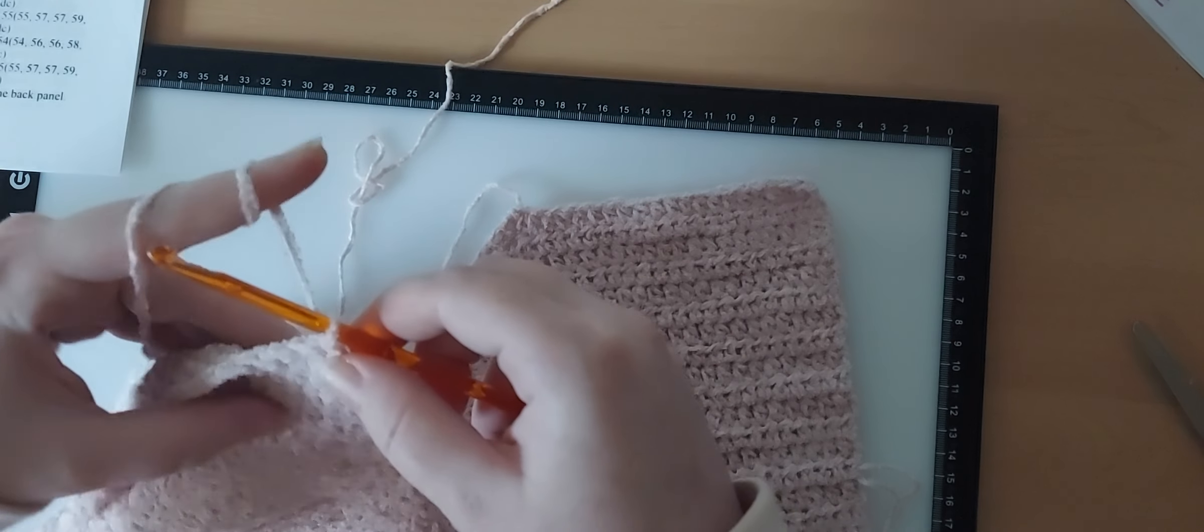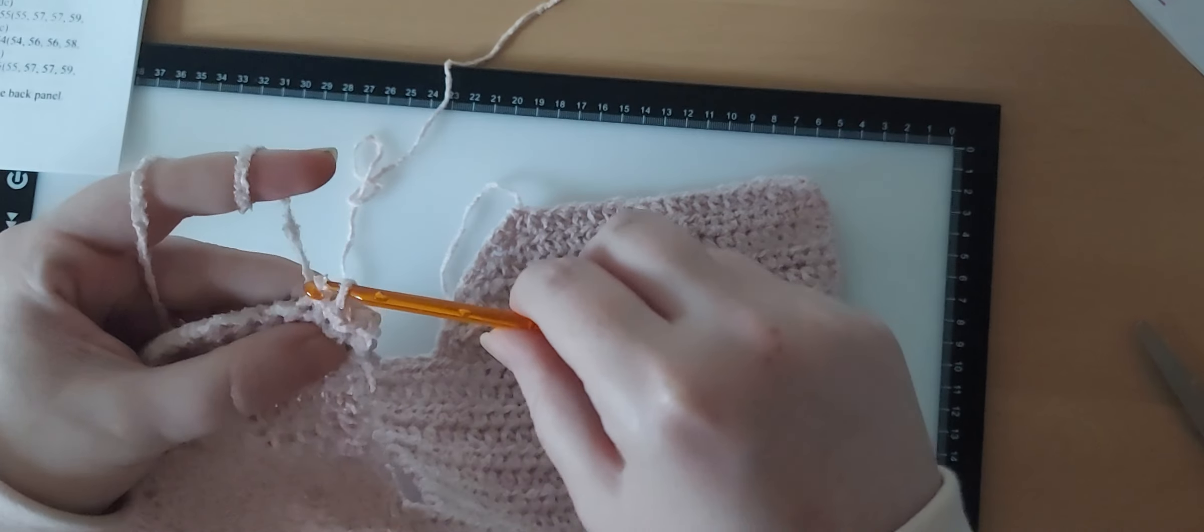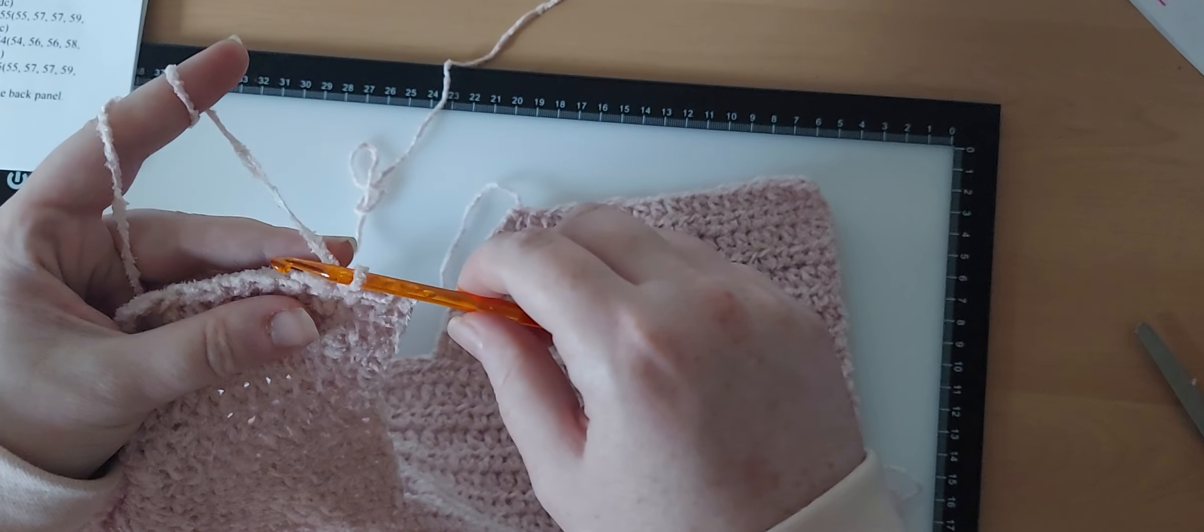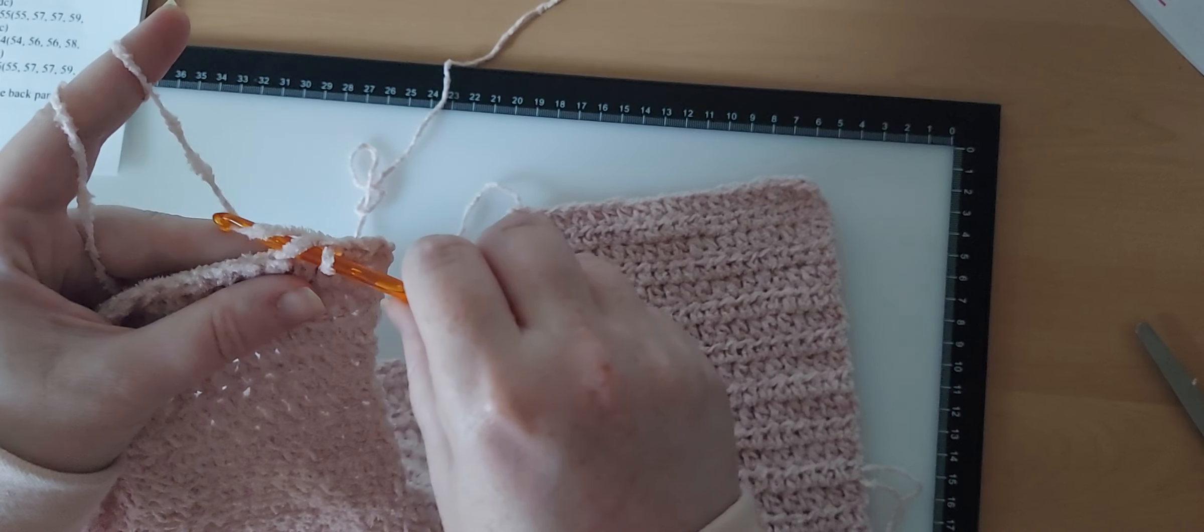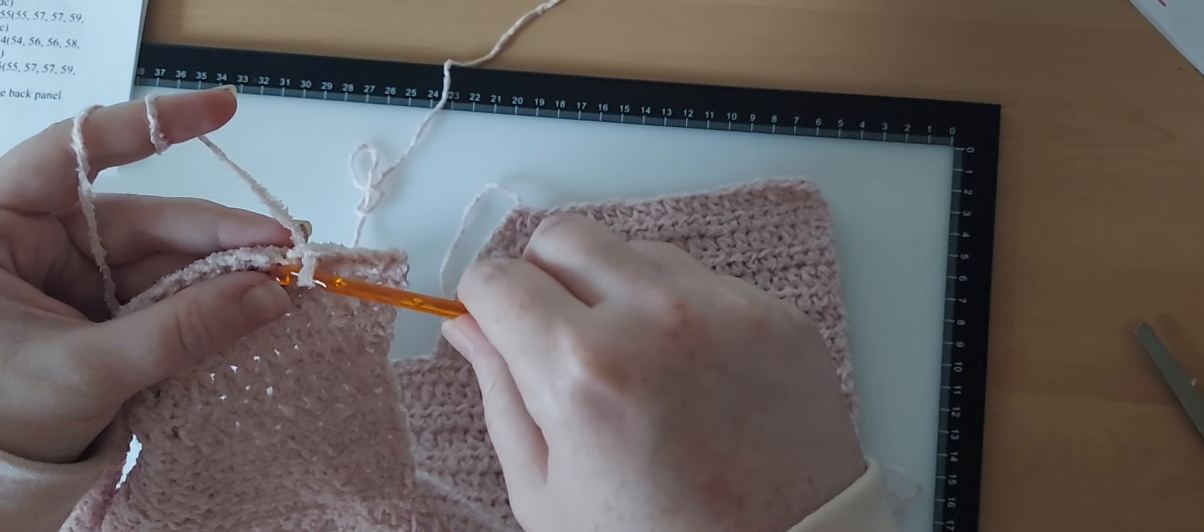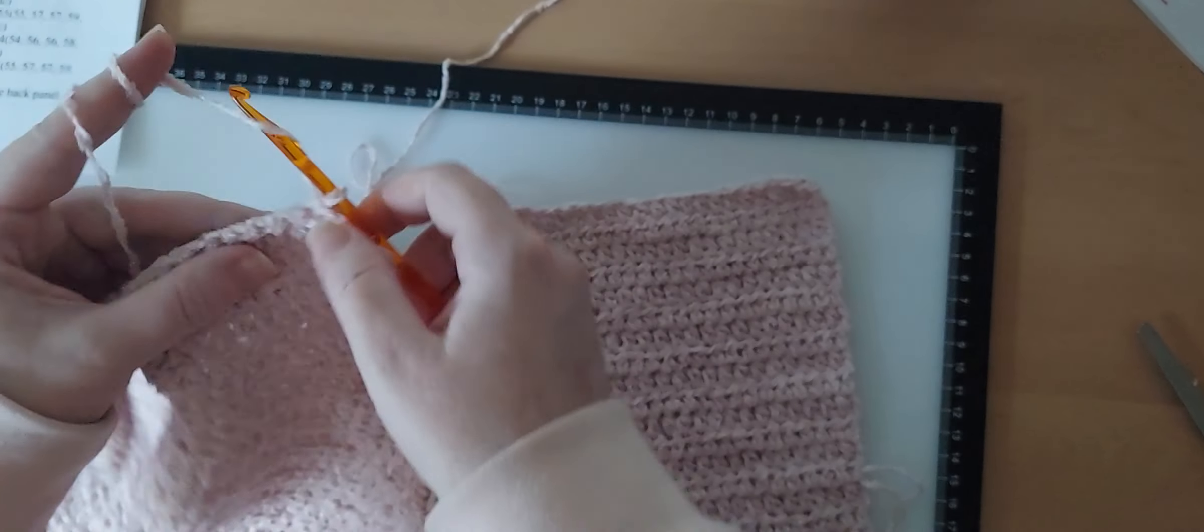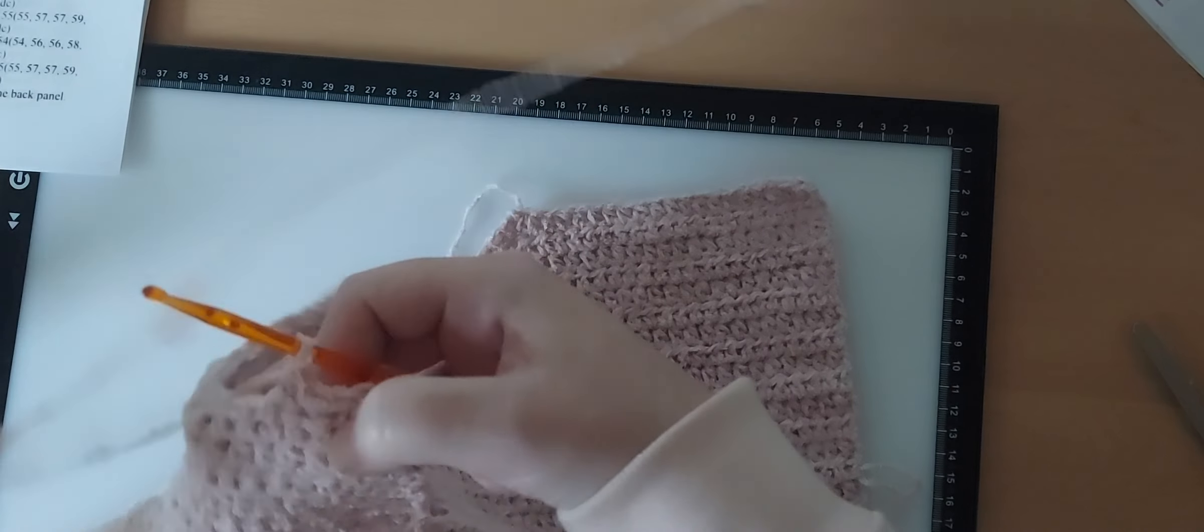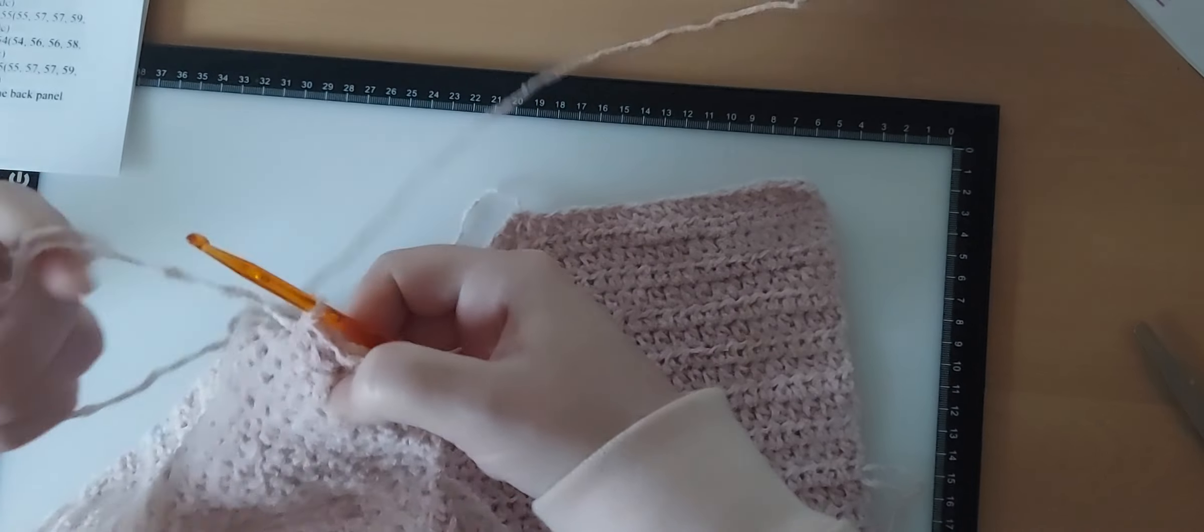We're going to do the same thing again. So you go into the stitch, grab the yarn, pull it through that stitch, and then through the loop that's already on the hook. 3 more times for a total of 5. I'm just doing it slowly so that anybody that might need the help can do it. So we now have 5 slip stitches, and then you're just going to half double crochet as we have been doing all the way across to the end.